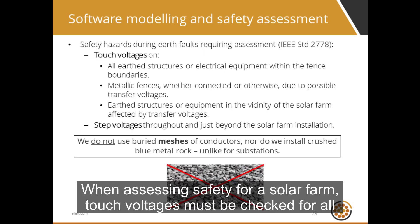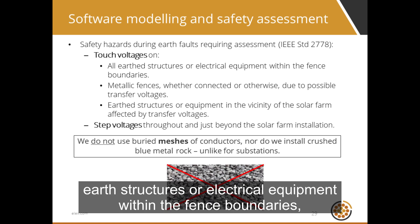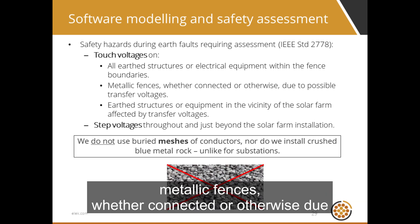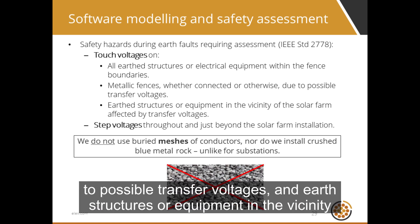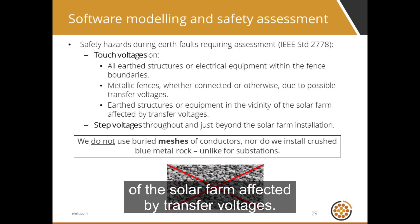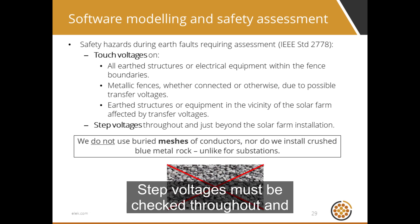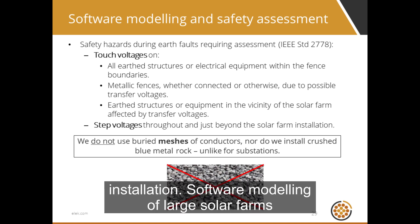When assessing safety for a solar farm, touch voltages must be checked for all earth structures or electrical equipment within the fence boundaries, metallic fences whether connected or otherwise due to possible transfer voltages, and earth structures or equipment in the vicinity of the solar farm affected by transfer voltages. Step voltages must be checked throughout and just beyond the solar farm installation.